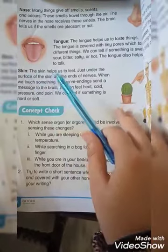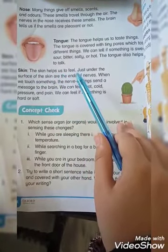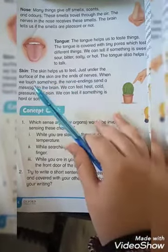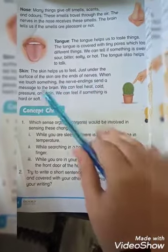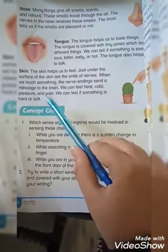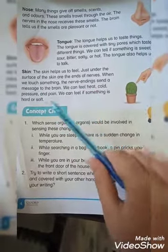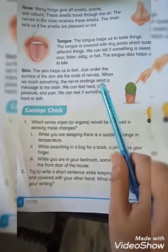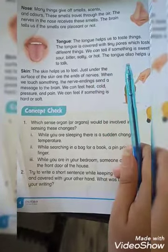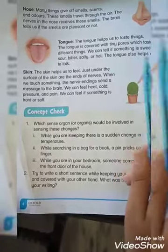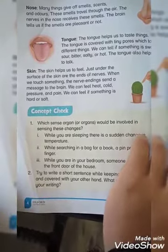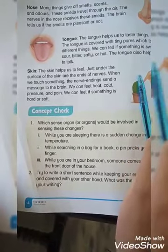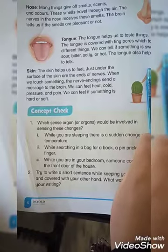The fifth and last organ is the skin. The skin helps us to feel. Just under the surface of the skin are the ends of nerves. When we touch something, the nerve endings send a message to the brain. We can feel heat, cold, pressure and pain. This is how our organs help us to sense different things and how all five senses work. This was today's lesson; the remaining lesson will be discussed in the next video. Take care of yourself. Allah Afiyah, Amin.